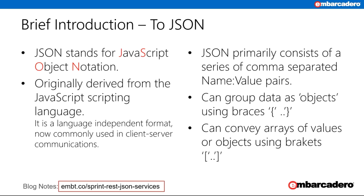JSON stands for JavaScript Object Notation and was originally derived from the JavaScript scripting language. Being a language-agnostic format, JSON is now used by a wide range of programming languages as a means of encapsulating data in a readable format. JSON primarily consists of a series of comma-separated name-value pairs, which may be grouped with braces to form objects, and may also be grouped with brackets to form arrays. JSON is also recursive in that any object can own any other object and may own values and arrays also.